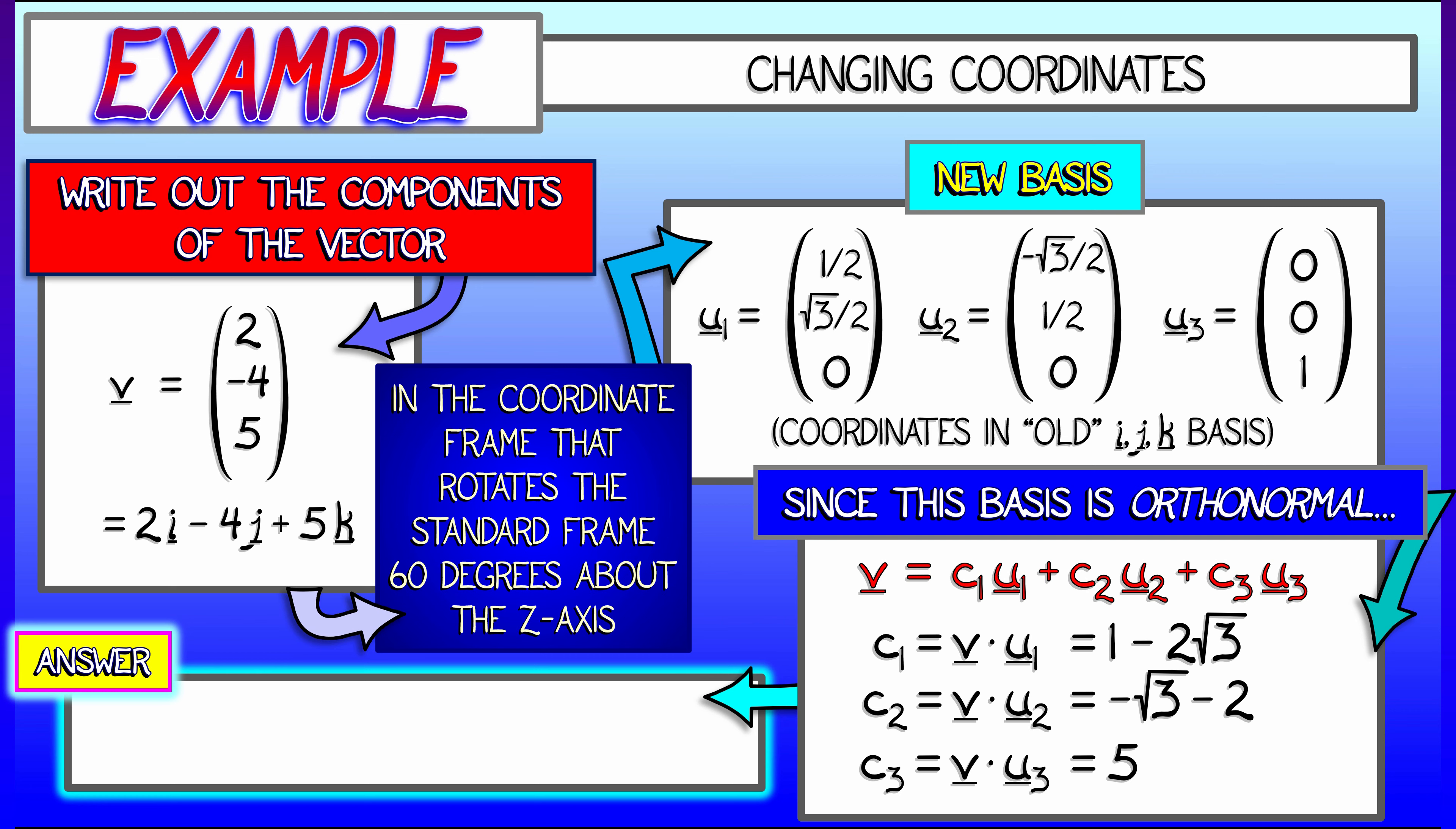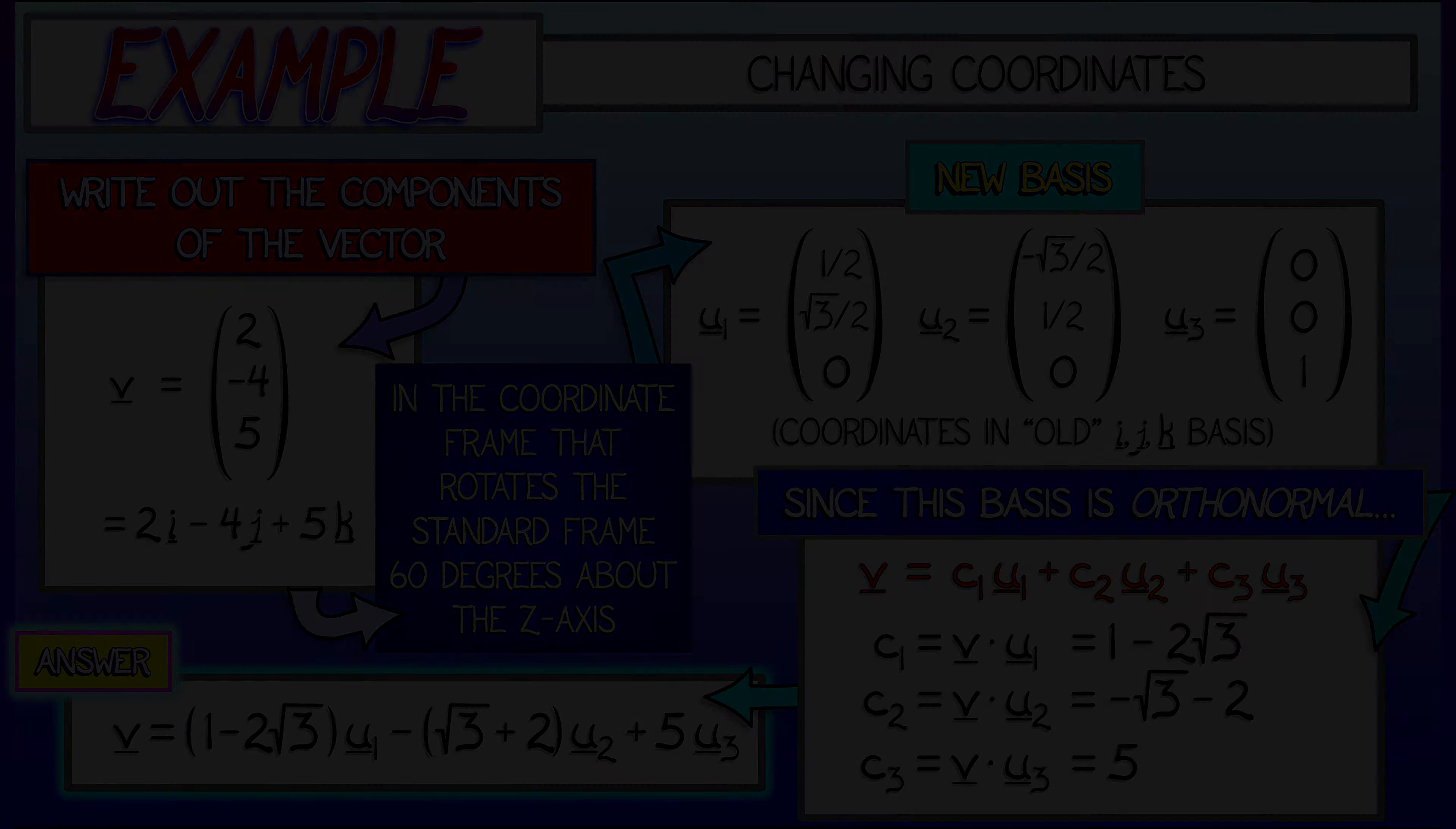So as a final answer, we can rewrite this vector v in this new basis as 1 minus 2 root 3 times u1 minus root 3 minus 2 times u2 plus 5u3. These coefficients up front, these are the coordinates of v in the new basis.